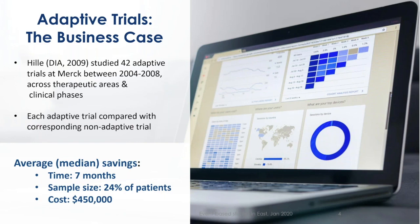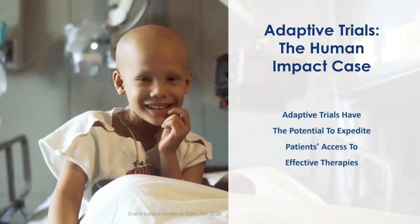What we're going to try to do today is alleviate some of the concerns about the complexity of these studies with the help of our software. The second component is the human case, where with adaptive and group sequential designs, we have the potential to expedite patients' access to effective therapies. We may be able to stop studies early if they don't exhibit the expected benefit, drop treatment arms, and reallocate subjects to more promising therapies. So there is an ethical component in these studies as well.